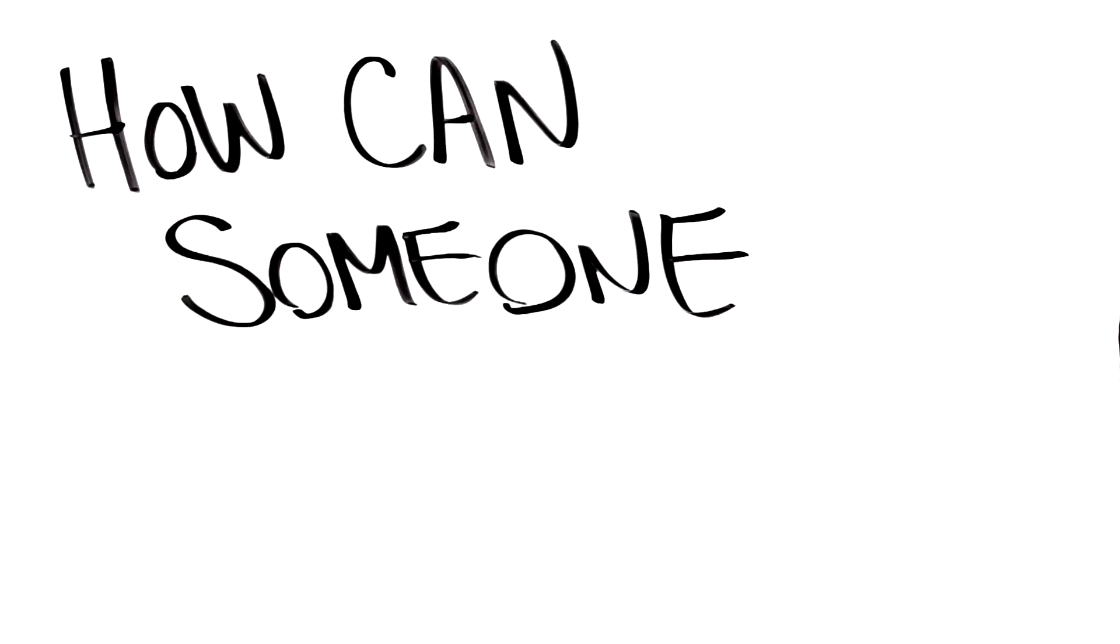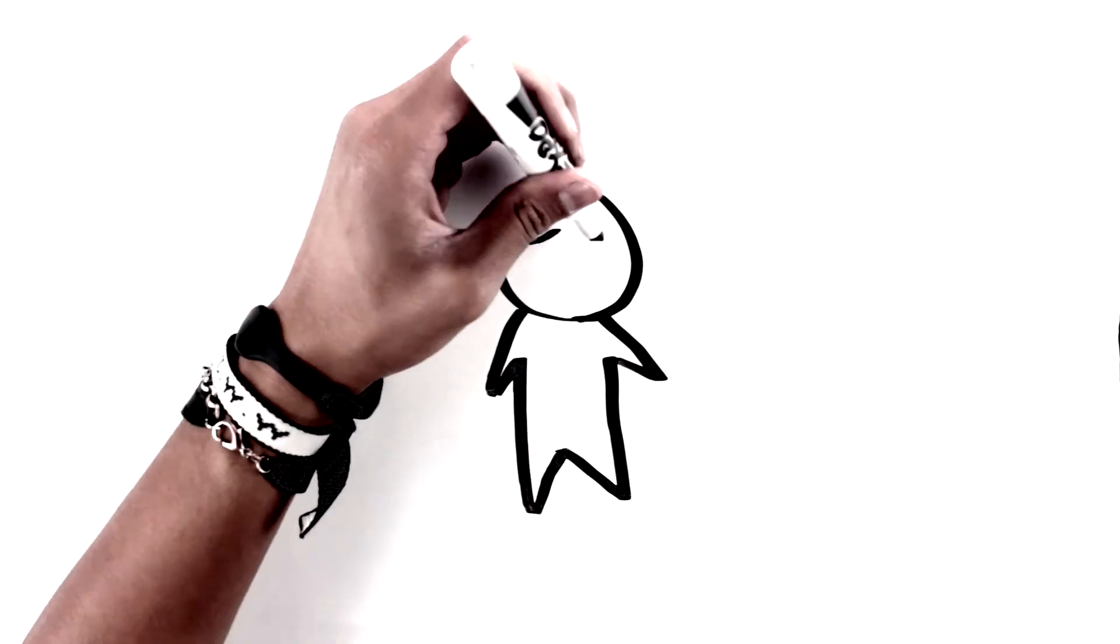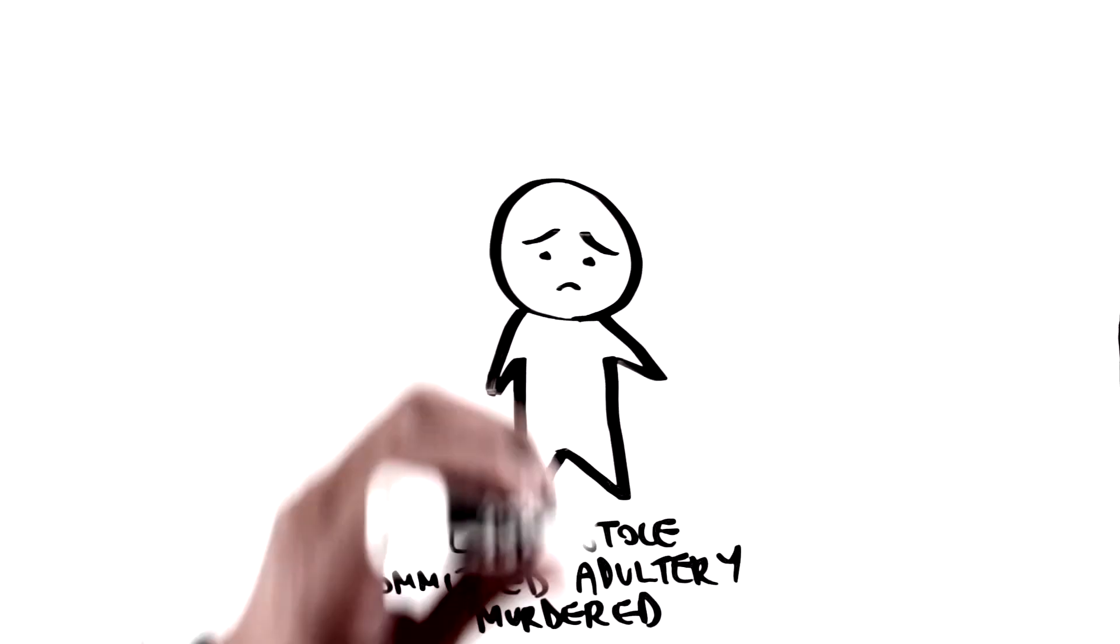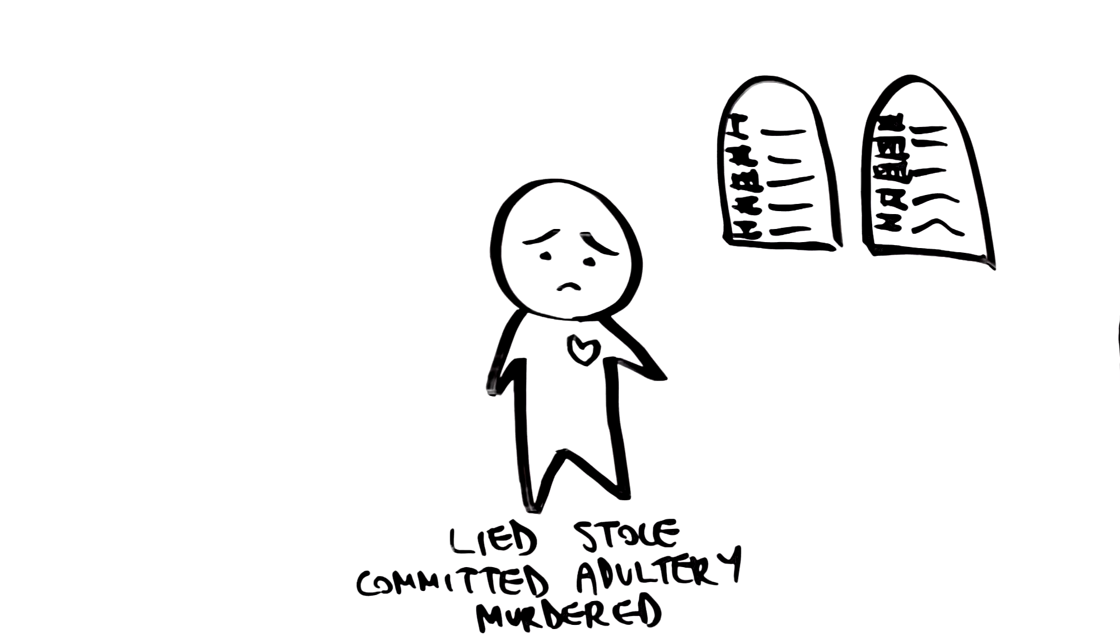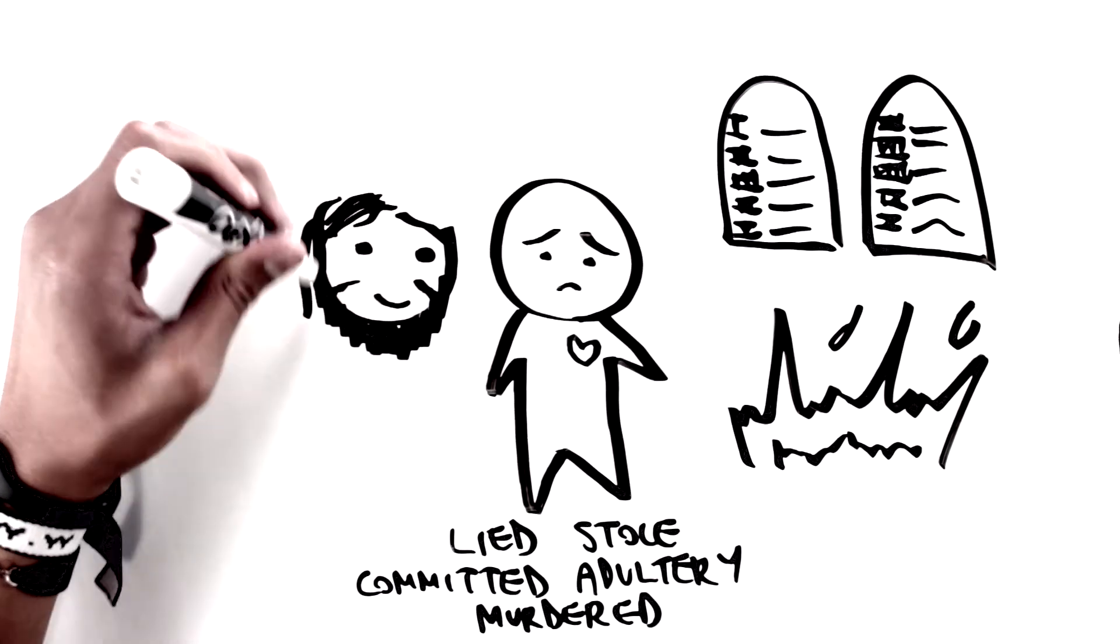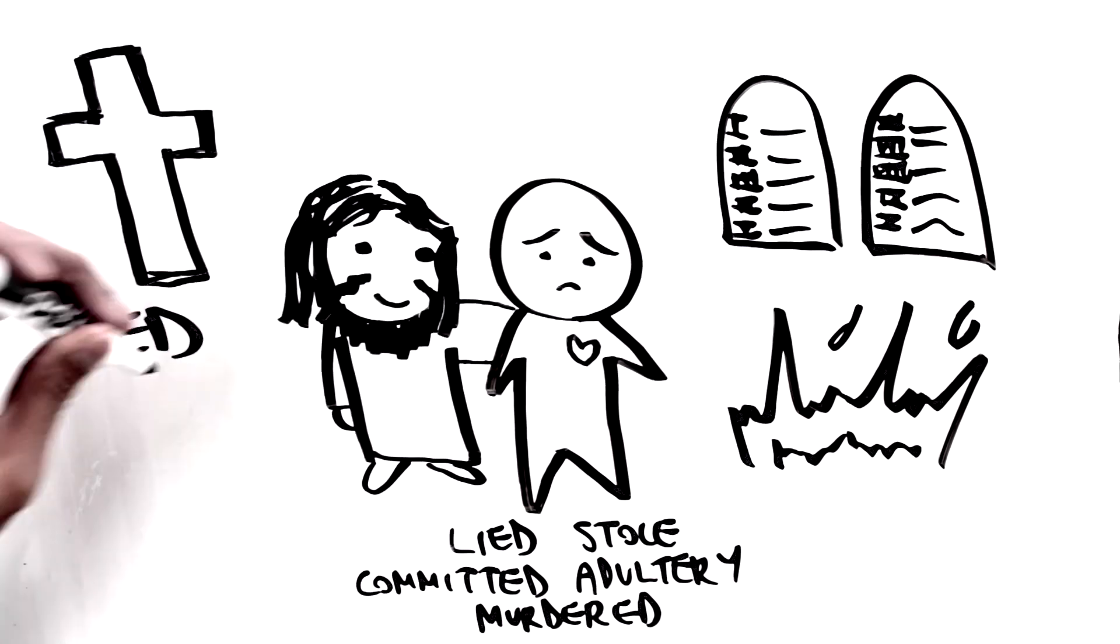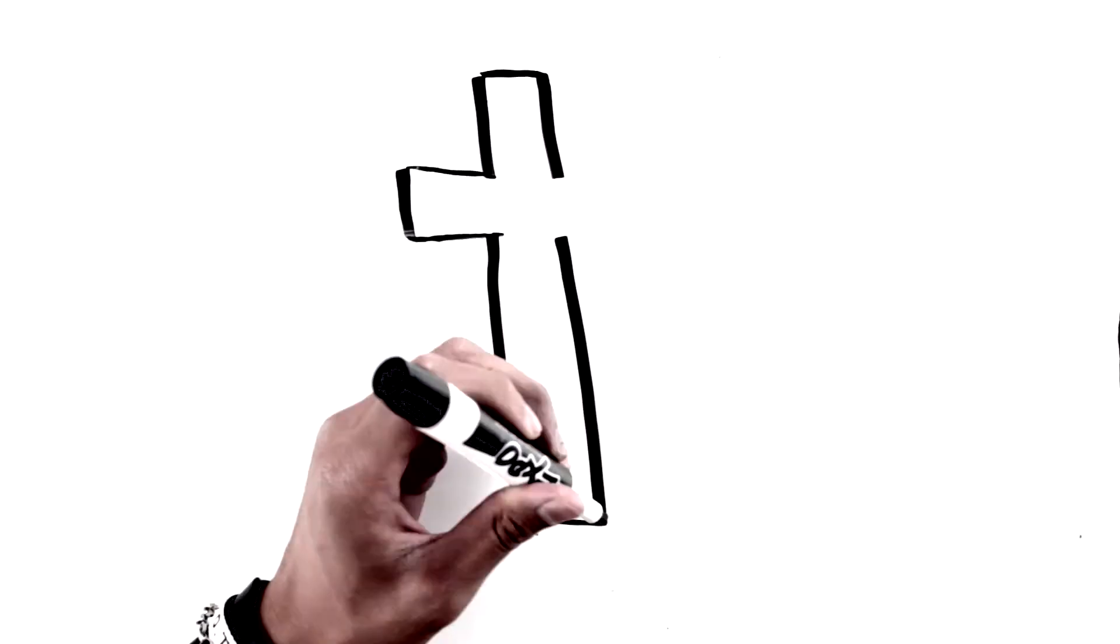Going back to our question, how can someone be saved? The answer is simple. Your sin was great. You lied. You stole. Committed adultery and murdered in your heart. And according to God's law, you deserve to be separated from God by going to hell for all eternity. But Jesus stepped in and paid your punishment by dying on the cross. God came in the form of a man, Jesus Christ, and died in your place. He died so you wouldn't have to.